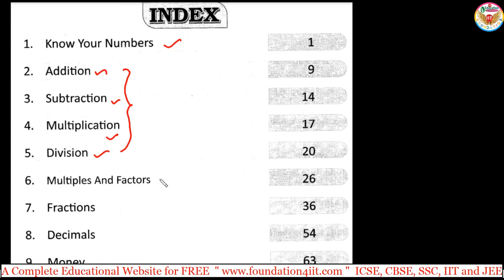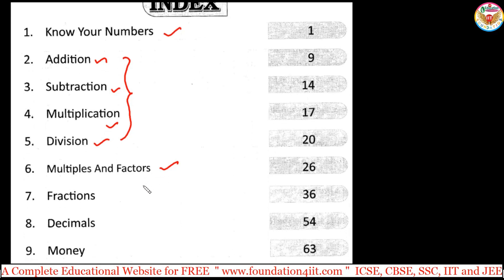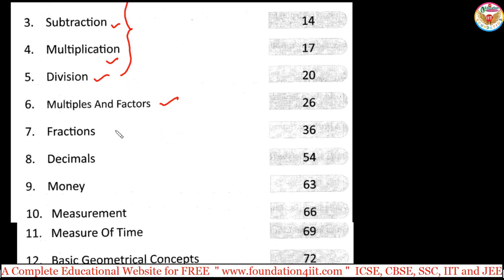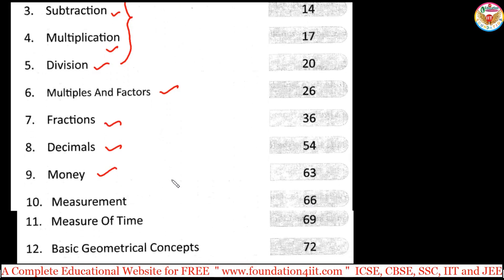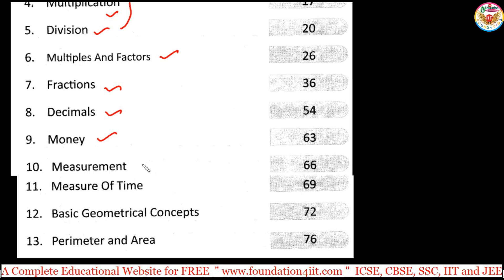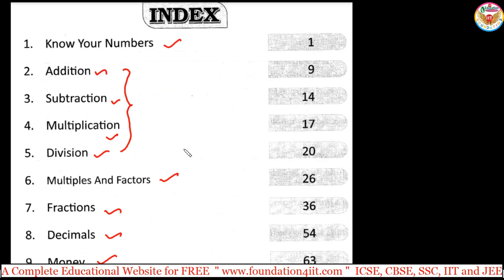Next is multiples and factors — understanding the differentiation between factors and multiples. Then we have fractions, decimals, and money. Up to 13 chapters in this series, including measurement, measure of time, basic geometrical concepts, and perimeter and area for 2D and 3D shapes. We have specially 2-dimensional shapes — perimeter and area concepts. The basic skills to improve geometrical concepts will be learned from class 4. These are the list of chapters, explained topic wise.